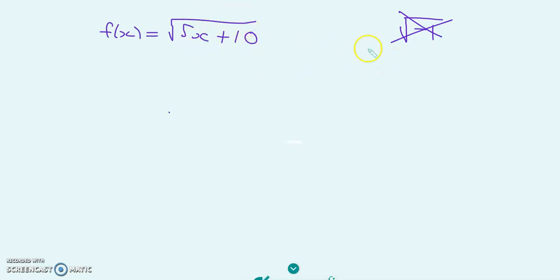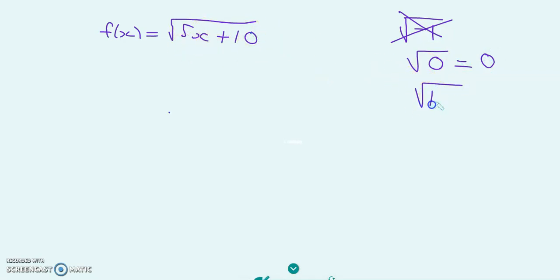But can 5x plus 10 be zero? Yes. If you take the square root of zero, it's going to be zero. Can 5x plus 10 be positive? Yes. Take a positive number like 10 — if you take the square root of 10, you're going to get some number. So the quantity inside the square root has to either be zero or positive. The quantity inside the square root can never be negative.